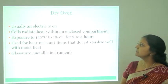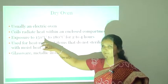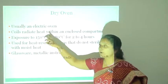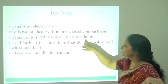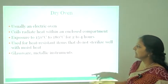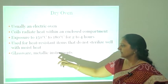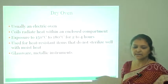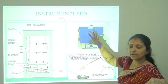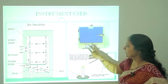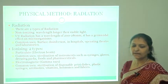The hot air oven is an electric oven. The temperature required for sterilization by hot air oven is 150°C to 180°C for 2 to 4 hours. It is used for sterilization of heat-resistant items such as glassware and metallic instruments. Here you can see the chamber of the hot air oven, which is used for sterilization of glasswares in the laboratory.